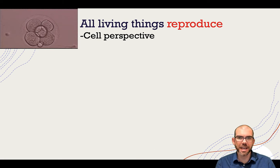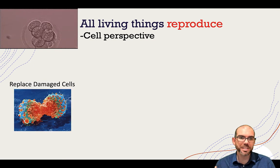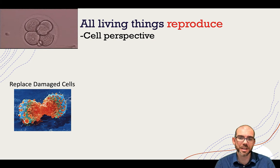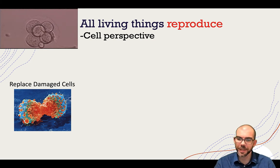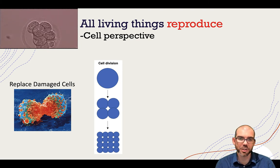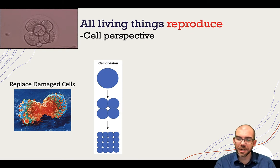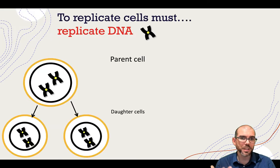A reminder of the characteristics of life: all living things have to be able to reproduce, and I want us to think of that from a cellular perspective. When cells become damaged, they need to be replaced. The organism that has those cells needs to continue its functioning. Also, when organisms grow or an old cell dies and needs to be replaced, cells can undergo cell division, where one cell can turn into two, two can turn into four. So we want to think about what's required for a cell to reproduce, specifically how it relates to its DNA.